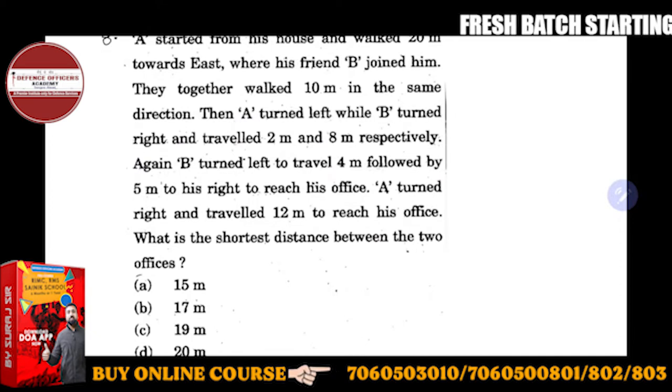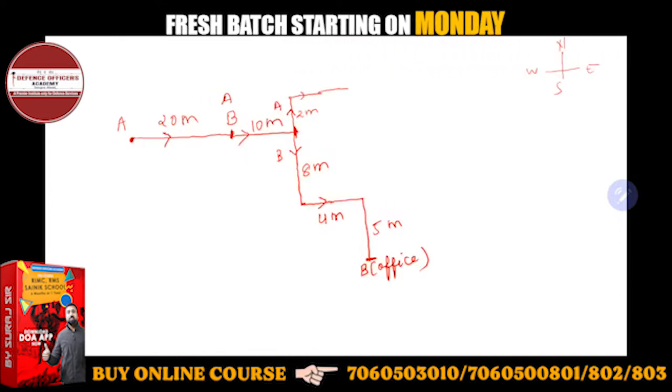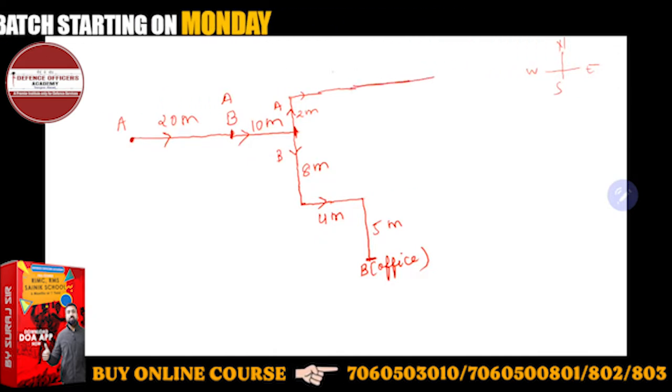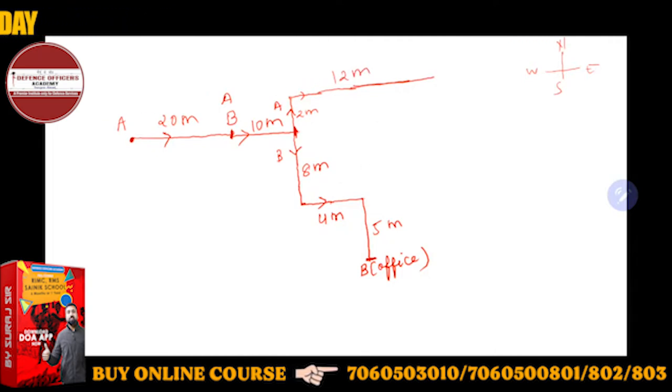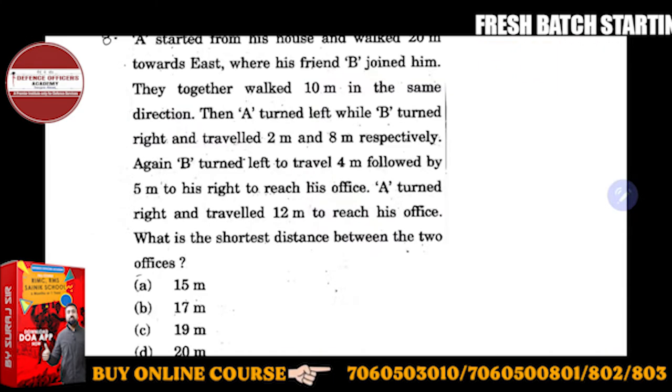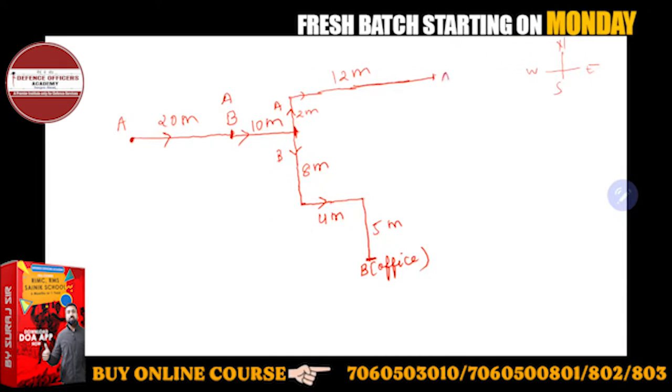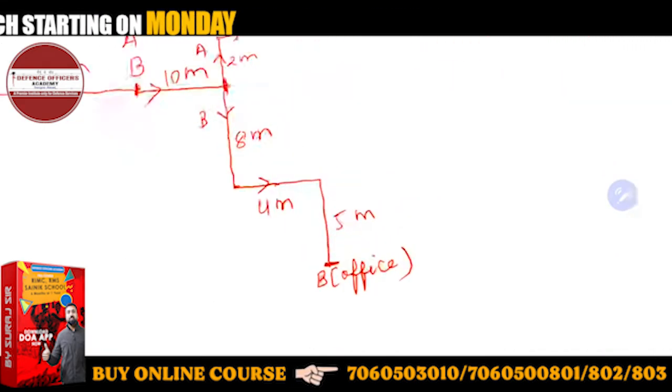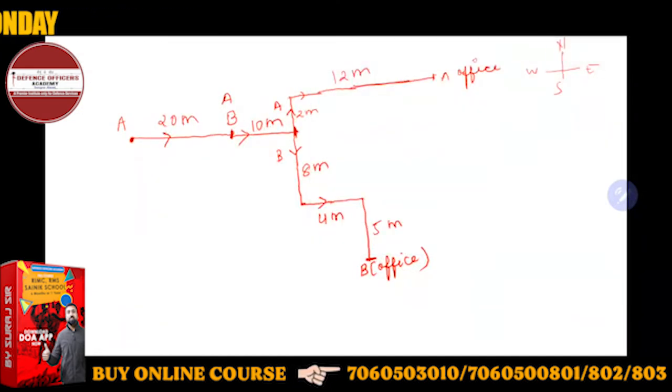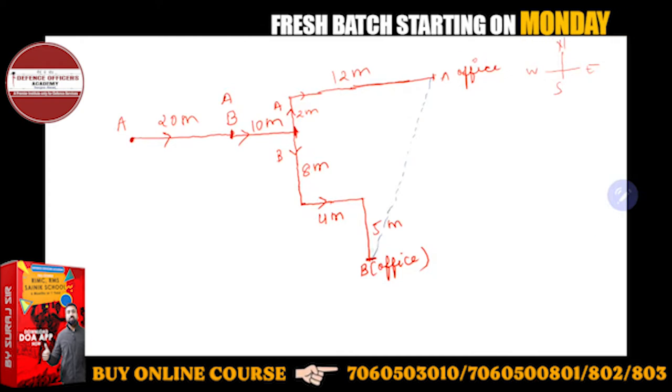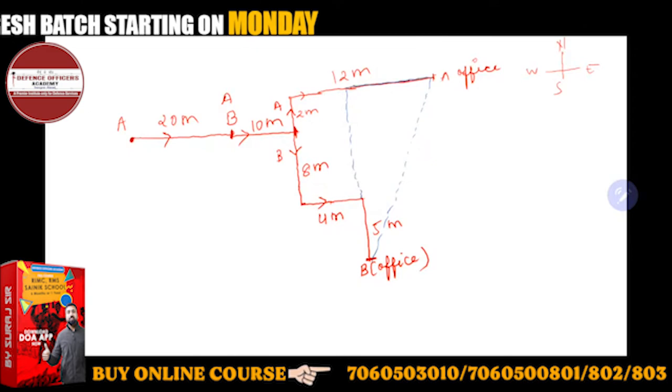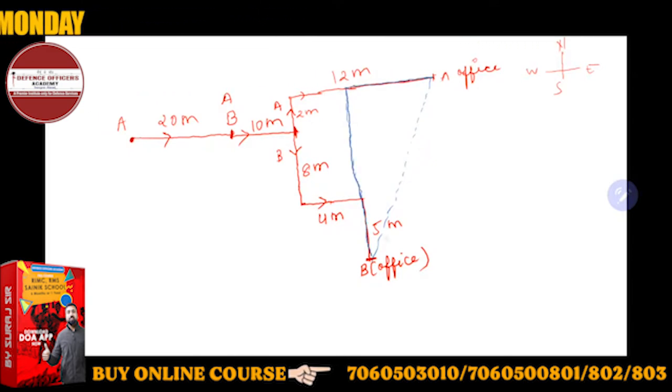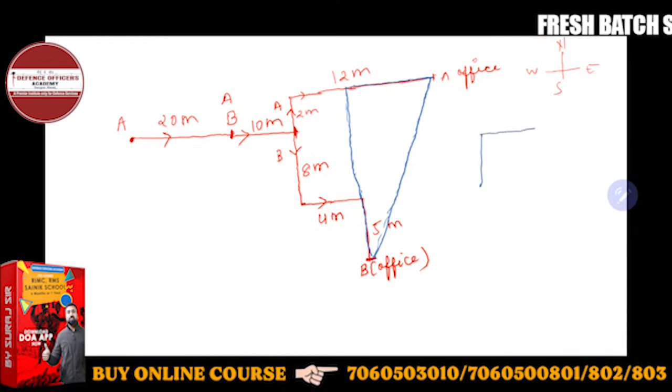A turned right and traveled 12 meters. The distance between the two offices, the shortest distance. So I will do a little bit of construction extra. This will be the shortest distance, straight line. I can see a right angle triangle, this right angle triangle is important. I can also make this one, I can draw this triangle like this.